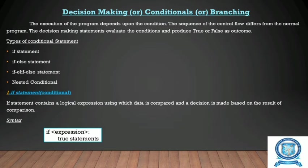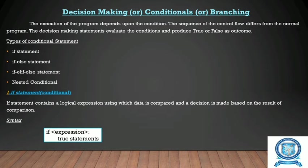The execution of the program depends on a condition, so that we call it as decision making statements or conditional statements. When a program gets executed, the sequence of the control flow will differ from the normal program. Normally the program will be executing in a sequential order, one after the other, but in this case we have to take a decision at a particular point.